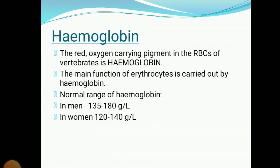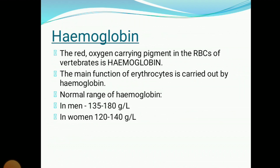What is hemoglobin? As I said in my previous lecture, hemoglobin is the main component of RBCs. It is the red oxygen-carrying pigment present in RBCs of vertebrates. The main function of the erythrocyte is carried out by hemoglobin. It is expressed in terms of grams per deciliter. The normal range of hemoglobin varies between 13.5 to 18 g/dL in men, whereas in women it ranges between 12 to 14 g/dL.